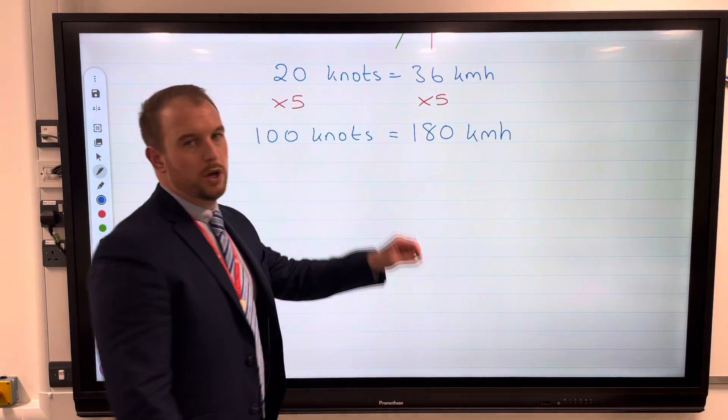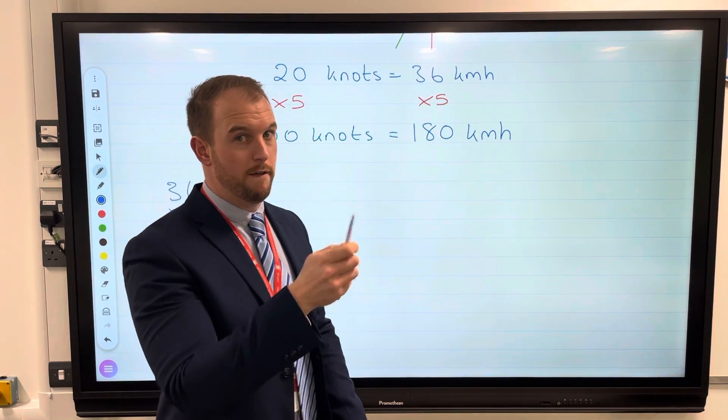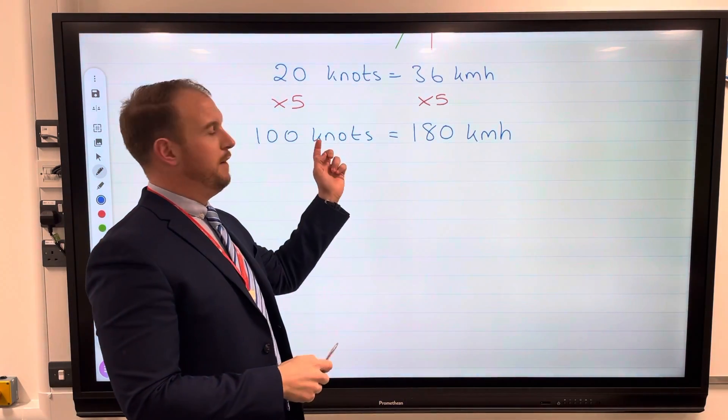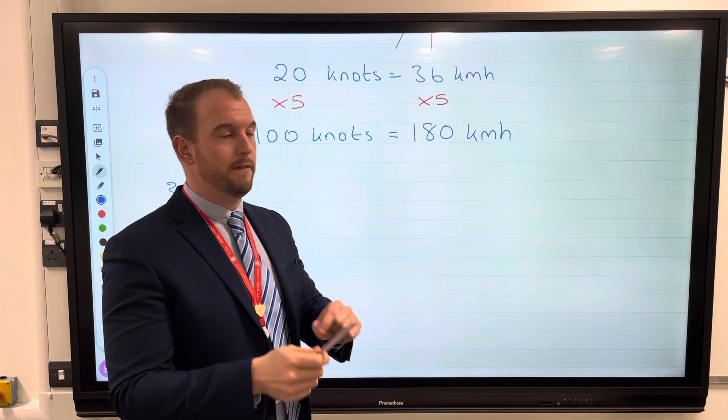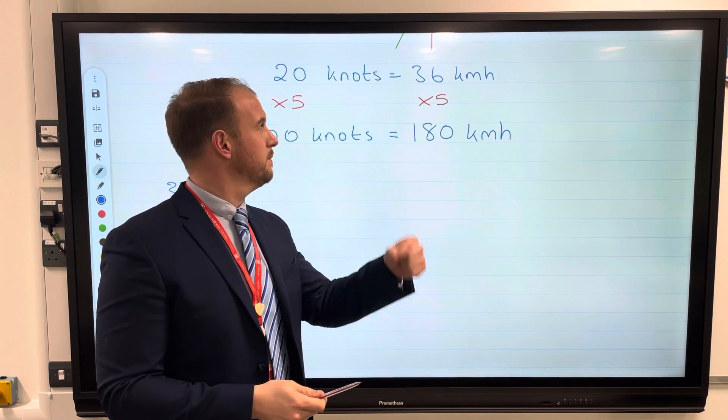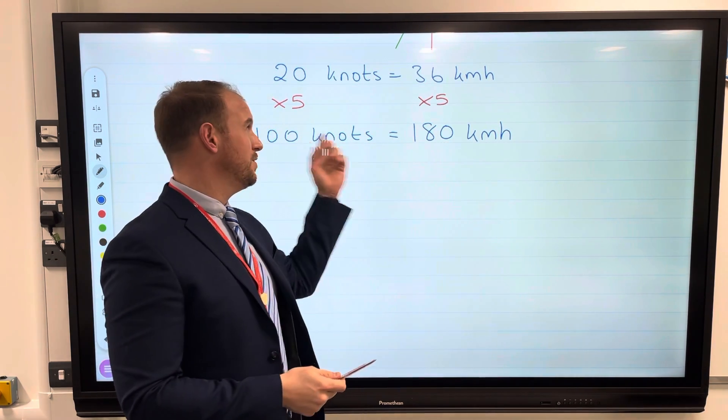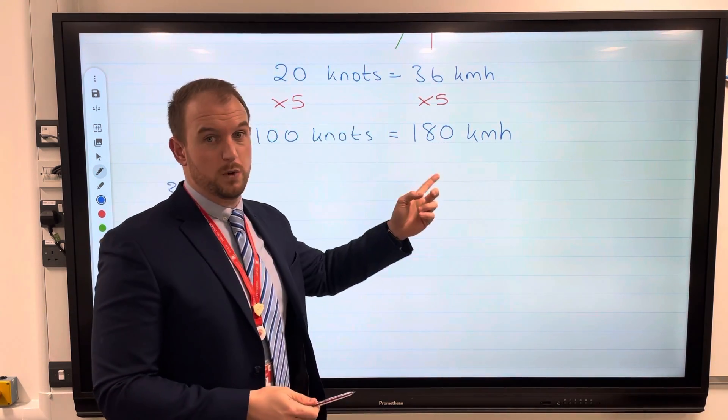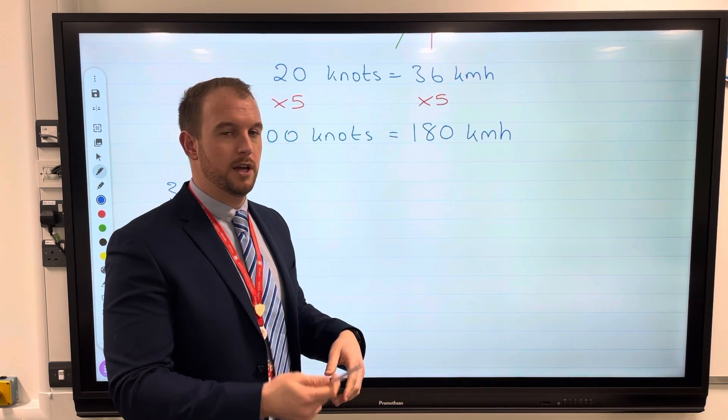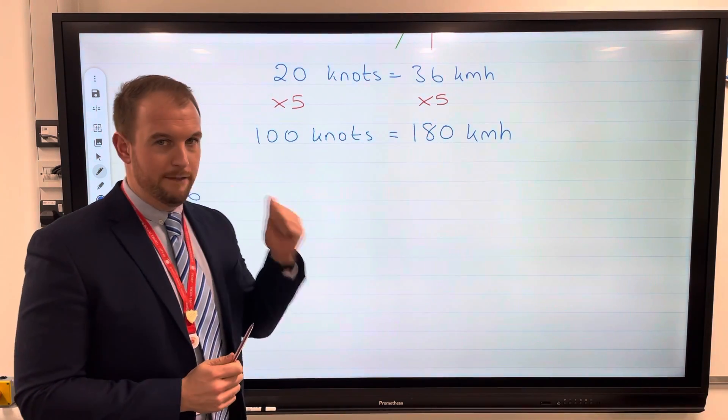So use those axes to help you, use your ruler very very important. If it asks you a question which is not on the graph, use your factors to help you. This one wanted 100 so I worked at 20 and then times it by five.